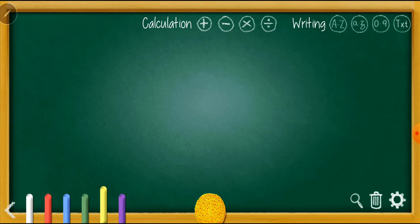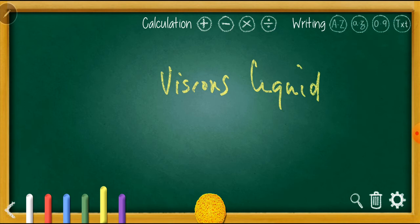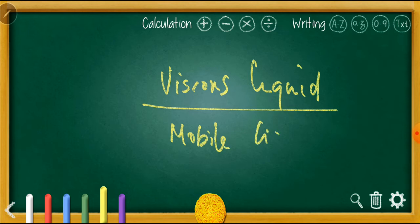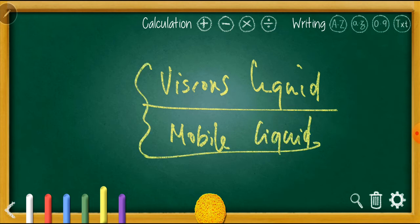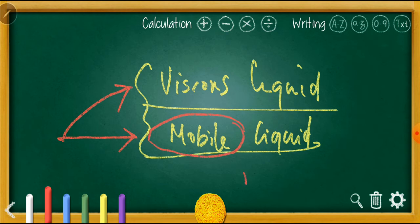Liquids of greater viscosity are called viscous liquids. If a liquid has higher viscosity or viscous force, we call it a viscous liquid. Liquids of very low viscosity are called mobile liquids. The word 'mobile' means movable, so a mobile liquid is one that moves easily. You have now studied two classifications of liquids based on viscosity: viscous and mobile.